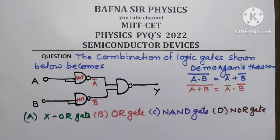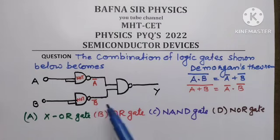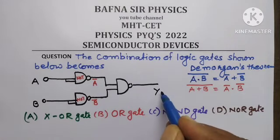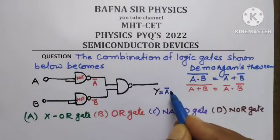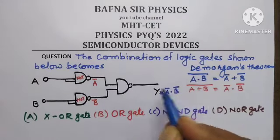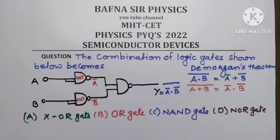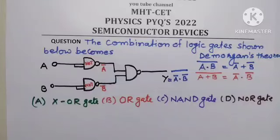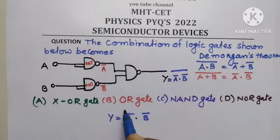Now, the third logic gate is a NAND gate whose two inputs are A-bar and B-bar. The corresponding output is the logical AND of the two inputs: first input is A-bar, second input is B-bar, and then the whole complement. So the output Y is equal to (A-bar · B-bar), whole complement.